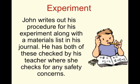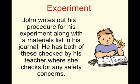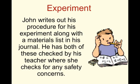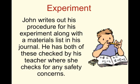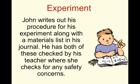So John writes out his procedure along with all the materials in his list. He has both checked by his teacher who checks for any safety concerns. You want to think of safety concerns so that you can write down any precautions an experimenter might take in your procedure. What you're doing when writing out your procedure is giving instructions to someone else who might want to do this experiment — if somebody else were reading this procedure, would they be able to do it exactly as you intended?